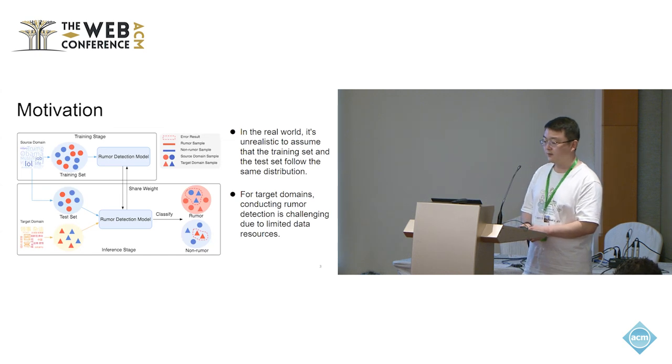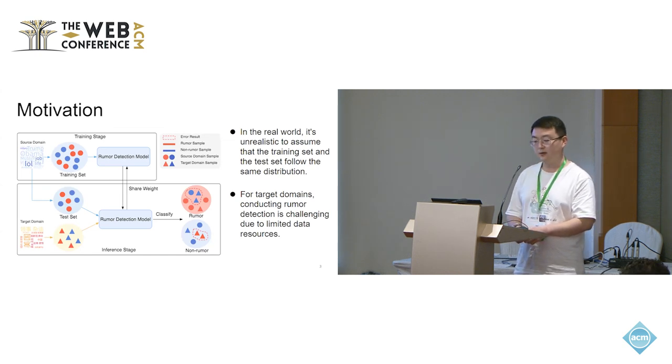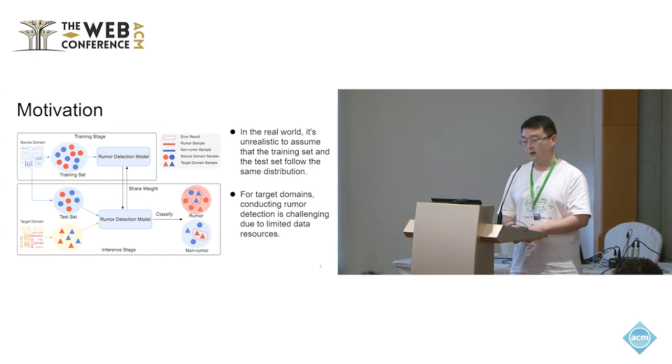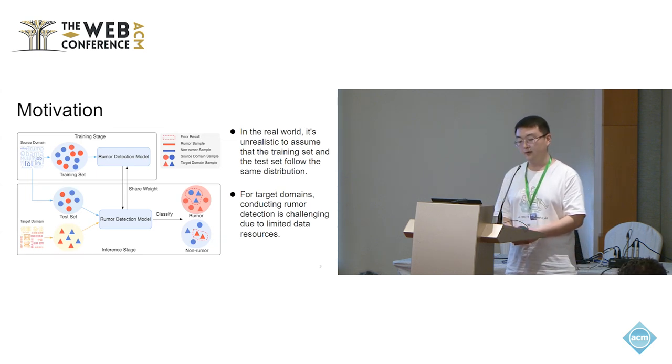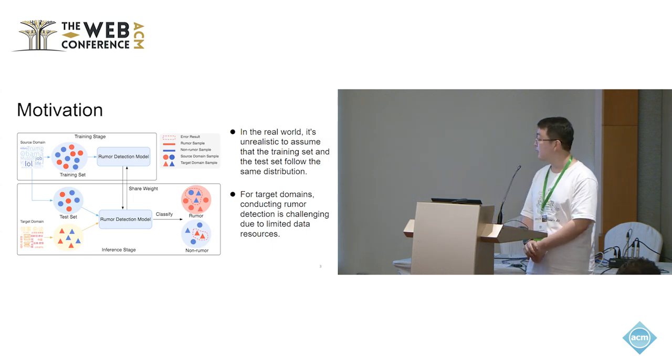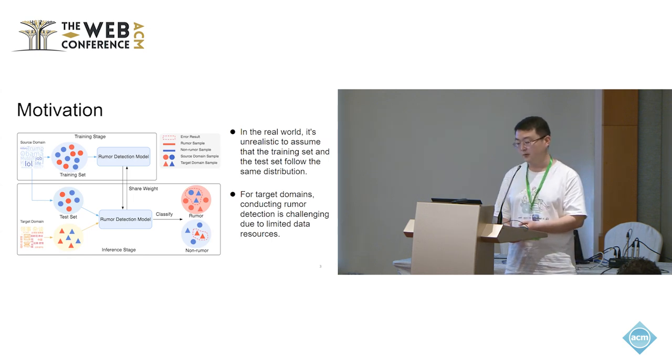In practice, there are a lot of emergent events appearing on social media. Due to the events being so early, there wasn't enough labeled data to support the model training, and the already trained model may fail because there exists a considerable semantics gap between the new and previous events.